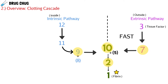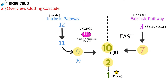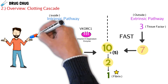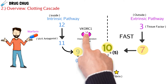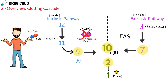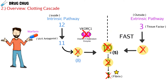Here we see the intrinsic pathway, the extrinsic pathway — they come together and eventually make fibrin. But where do clotting factors really come from? There's an enzyme called VKORC1, a vitamin K-dependent enzyme, meaning it needs vitamin K to produce these clotting factors. When we give a patient warfarin — which is a vitamin K antagonist — warfarin blocks VKORC1, blocking the production of clotting factors 2, 7, 9, and 10, and the end result is less fibrin.